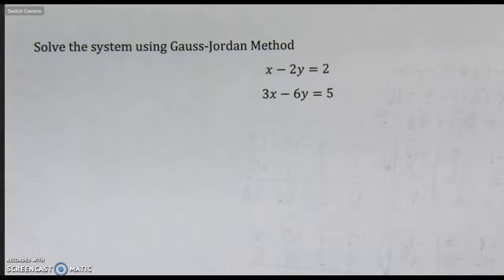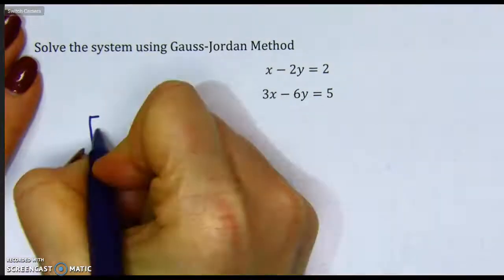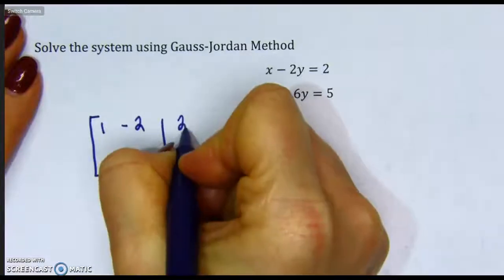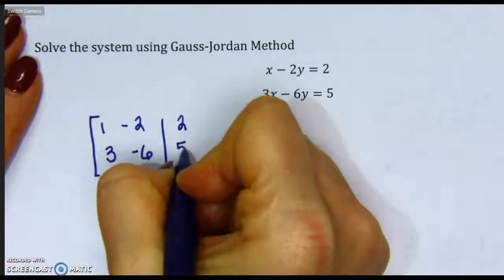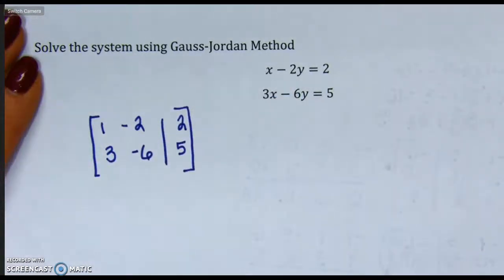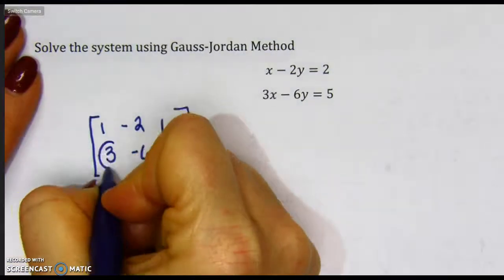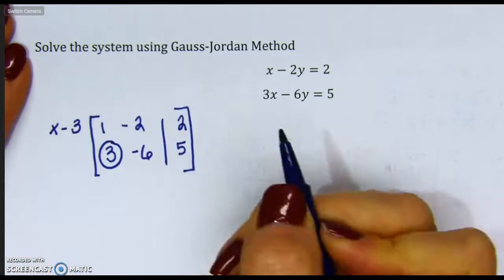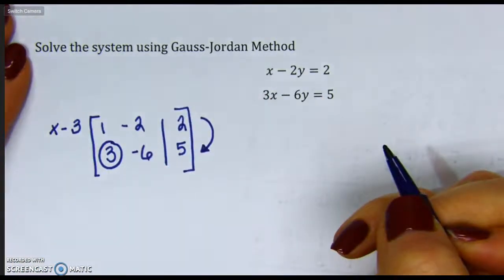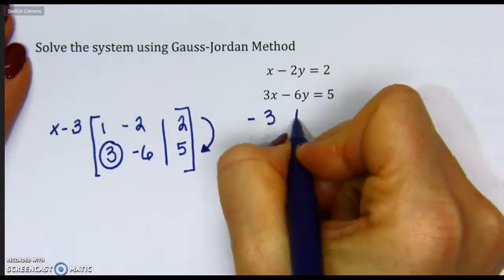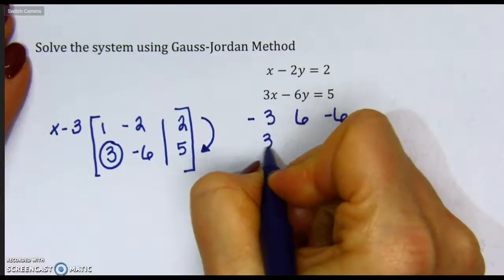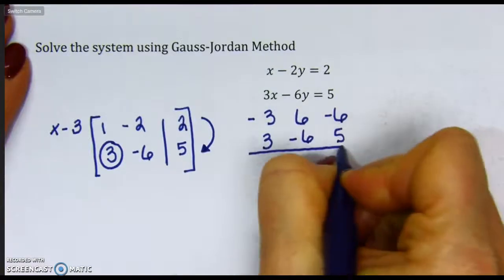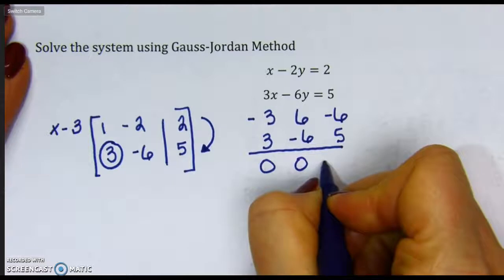Let's solve this system using the Gauss-Jordan method. I see that I already have the x's and y's on the left with the constant on the right, so we'll first start off by turning this into an augmented matrix. My first goal is to obtain a 0 in the 3 location. So it looks like I want to multiply my top row by negative 3, and then add down to replace that second row. Giving me negative 3, positive 6, negative 6, 3, negative 6, 5, 0, 0, negative 1.